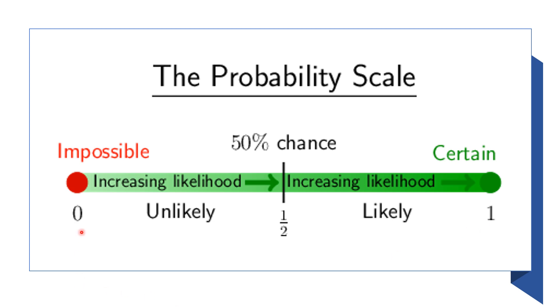For example, today is Monday. What is the probability that tomorrow will be a Sunday? You'd say probability equals zero, because that event is impossible. If today is Monday, and the question is: what is the probability that tomorrow will be a Tuesday? In that case, we say probability equals one, because that event is certain.